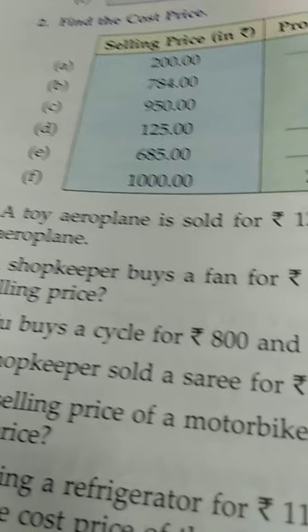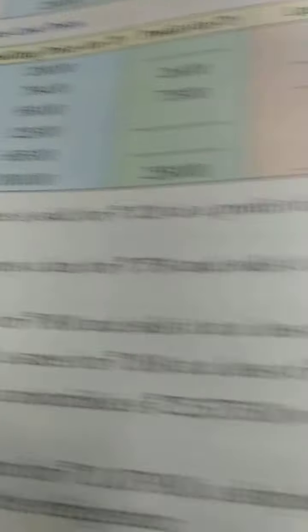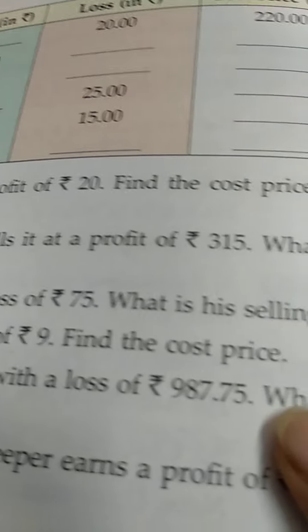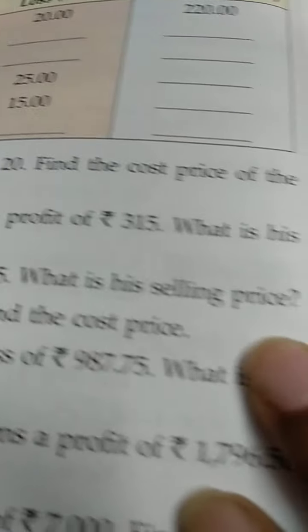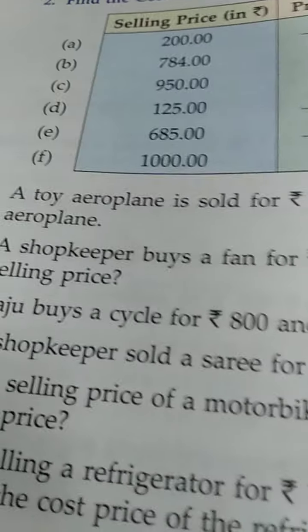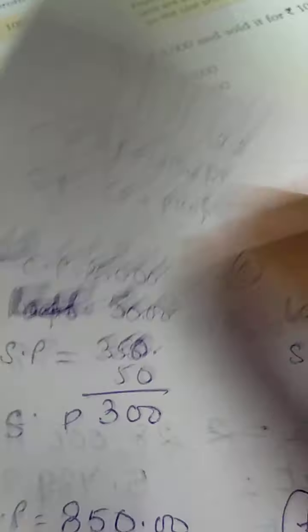Next question. A shopkeeper buys a fan for Rs. 750 and sells it at a profit of Rs. 135. What is this? Selling price. Formula for selling price is CP plus profit. So, let's do the sum.